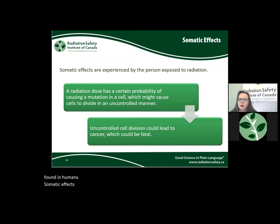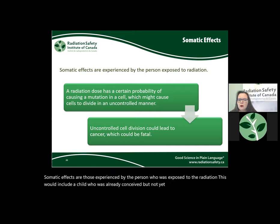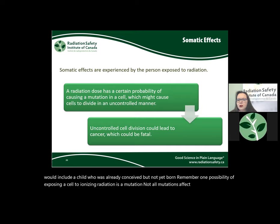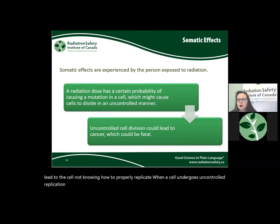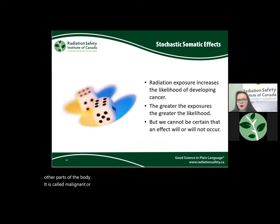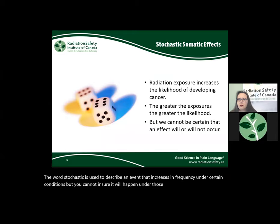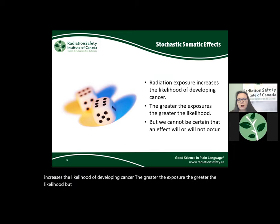Somatic effects are those experienced by the person who was exposed to the radiation, including a child already conceived but not yet born. One possibility of exposing a cell to ionizing radiation is a mutation — some mutations can cause a cell to not know how to properly replicate, leading to uncontrolled replication and a tumor. When a tumor invades other tissues or spreads to other parts of the body, it is called malignant, or cancer. The word stochastic describes an event that increases in frequency under certain conditions, but cannot be guaranteed under those conditions. Radiation exposure increases the likelihood of developing cancer — the greater the exposure, the greater the likelihood — but we cannot be certain an effect will occur, so we call it a stochastic effect.